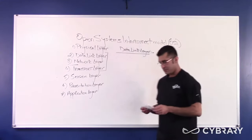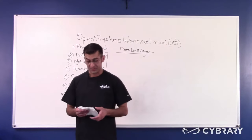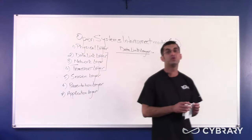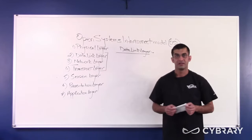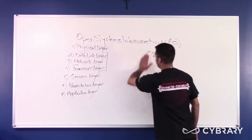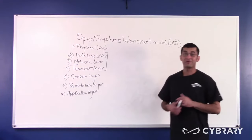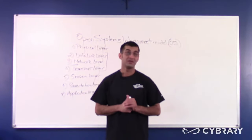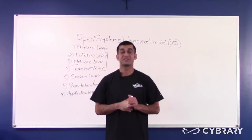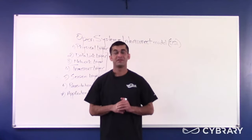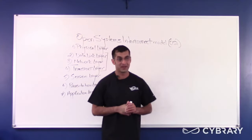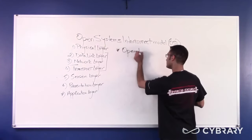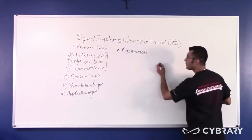Up until now, I have mentioned what type of addressing is used at layer two, or the data link layer, and what the protocol data unit is at the data link layer — the protocol data unit being the frame. I haven't mentioned yet what devices work at the data link layer. Most specifically, a switch operates at the data link layer. Now I'm going to explain how a switch functions.